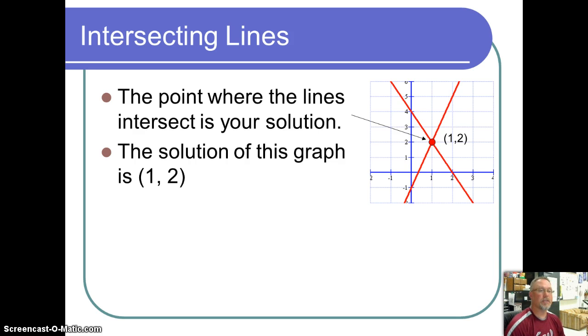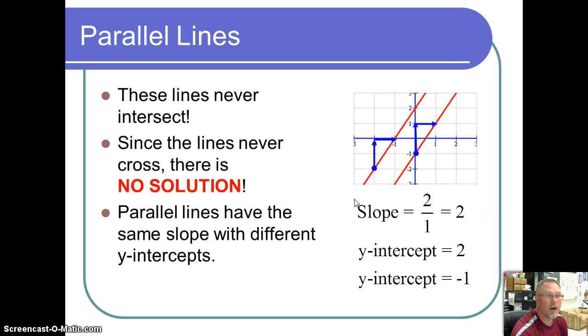When we talk about a system, we talk about two lines. One is they intersect. The point where they intersect is the solution to your graph. In our example here you have it at 1, 2 for the intersection. If they don't meet or cross, then we have parallel lines. Remember that parallel lines have the same slope but different y intercepts.